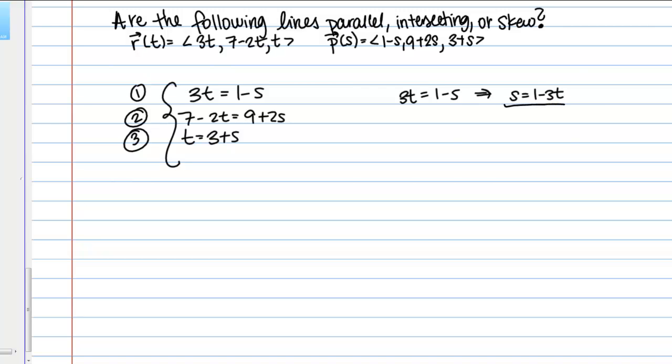I have this s = 1 - 3t. Now what I'm going to do is I'm going to take this and sub this into equation 2. That will get me down to a single variable that I can solve for. Equation 2 is the 7 - 2t = 9 + 2s. I'm going to take this expression I just found for s in terms of t and plug it in for s. I end up with 7 - 2t = 9 + 2(1 - 3t).